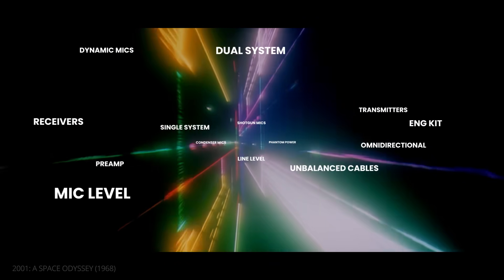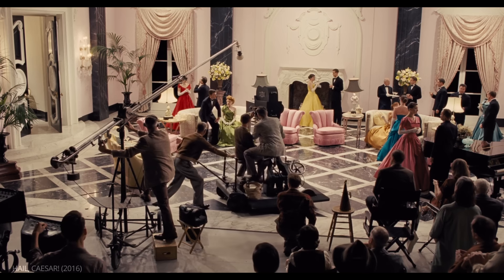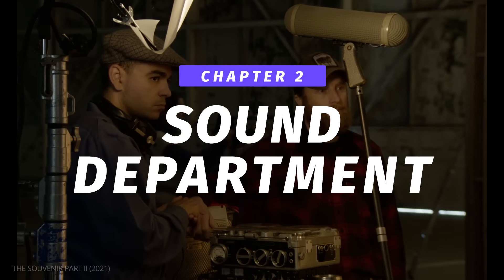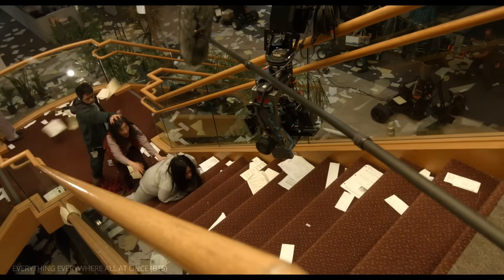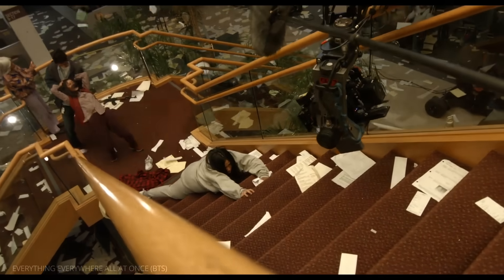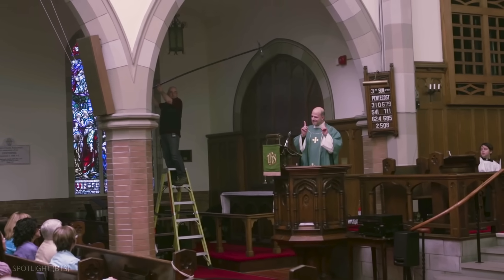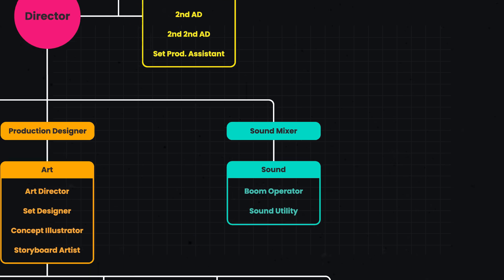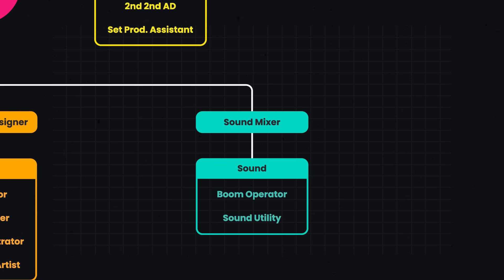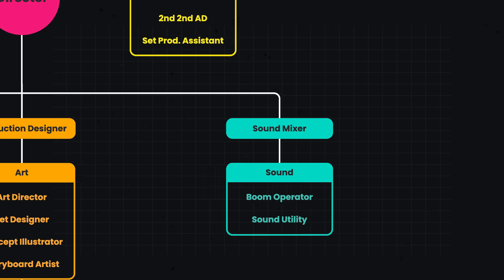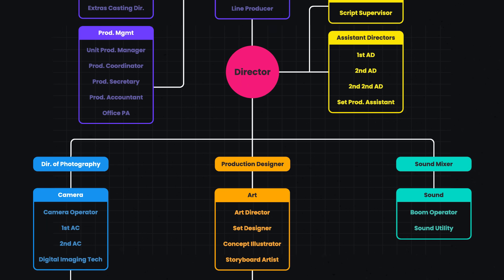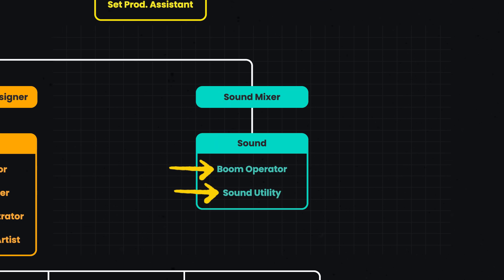These are only a portion of the large swath of sound equipment that may be employed on a professional set. Let's look at the people who use all the equipment — the sound department. All the equipment in the world is useless without a talented sound department. Their roles on set can sometimes be taken for granted, but they are crucially important. The head of the sound department is the sound mixer, otherwise referred to as the sound recordist. They are in charge of communicating to other departments, as well as hiring other members of their team.